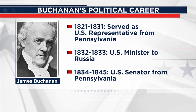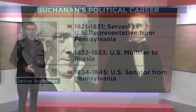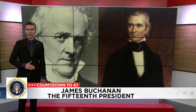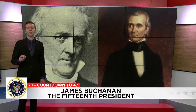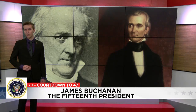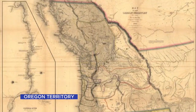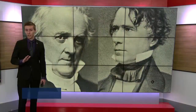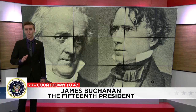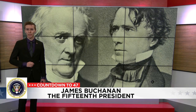In 1844, Buchanan would run for president, but he lost the Democratic nomination to James K. Polk. In 1845, Buchanan was named as President Polk's Secretary of State, where he played a hand in negotiating the Treaty of Oregon in 1846. In 1852, Buchanan ran for the high office once again, but lost the nomination to Franklin Pierce.